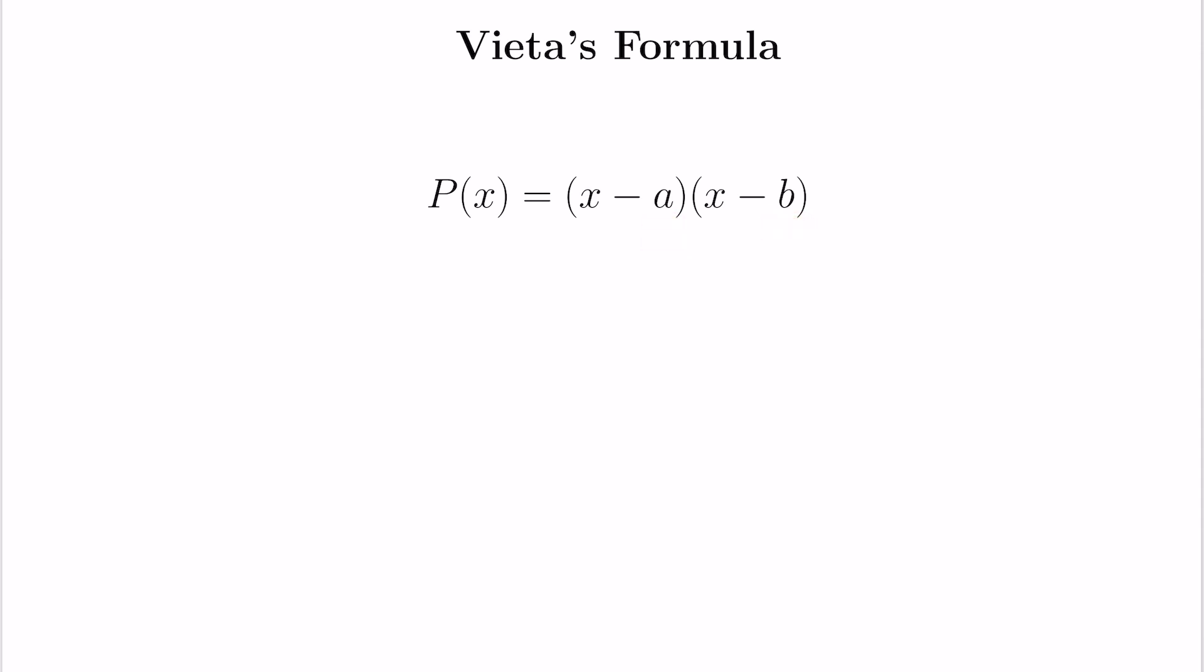So we'll start by looking at a quadratic polynomial like the one we have here and suppose that a and b are the roots, and so we can write the polynomial in this form. We'll assume the polynomial has 1 as its highest degree coefficient.